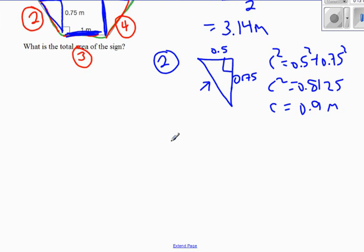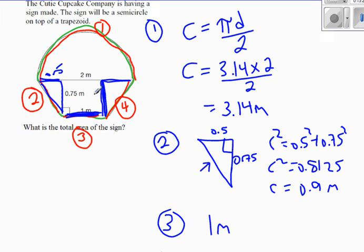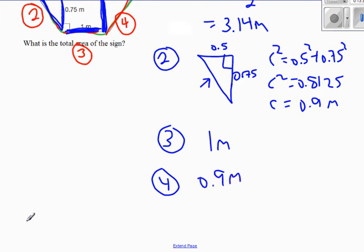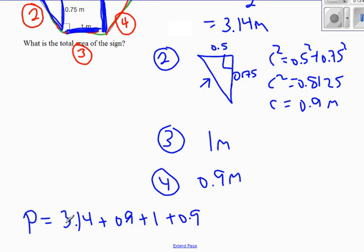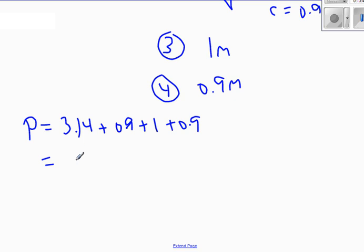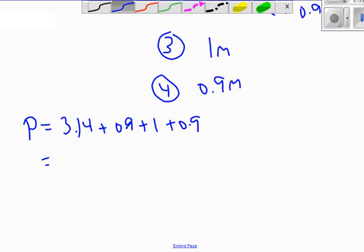The third part of the perimeter is the bottom, labeled 1 meter — no problem. The fourth side is identical in shape to part 2, with the same 0.75 and 0.5 measurements, so I don't need to use the Pythagorean theorem again — it's also 0.9 meters. Adding them all up: the perimeter is 3.14 plus 0.9 plus 1 plus 0.9, which gives a total perimeter of 5.94 meters.